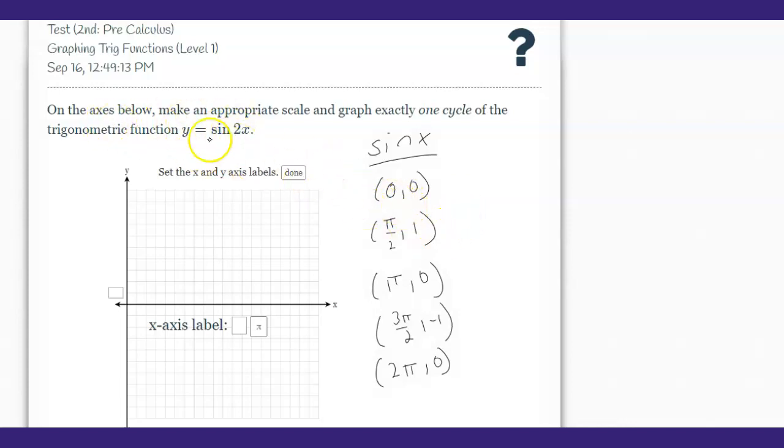On this problem, we have y equals sine of 2x. These are the critical points of sine x. We see k is 2, so what we're going to do is multiply all these x values by the inverse of k.